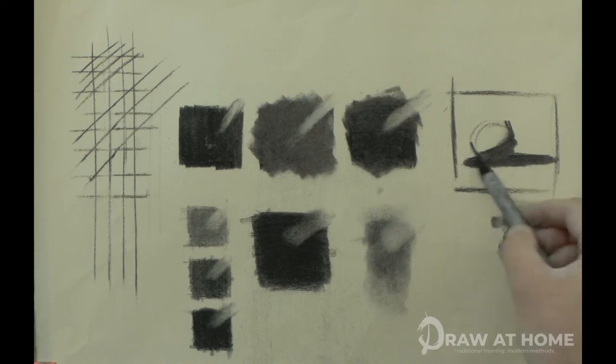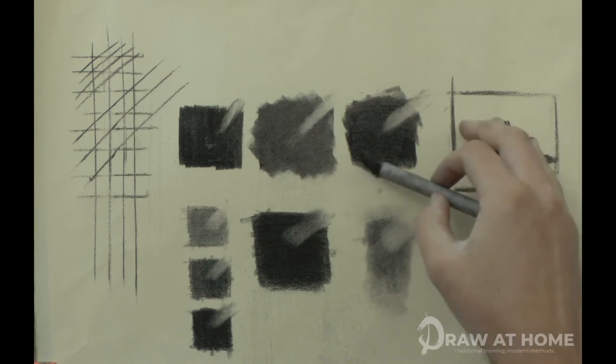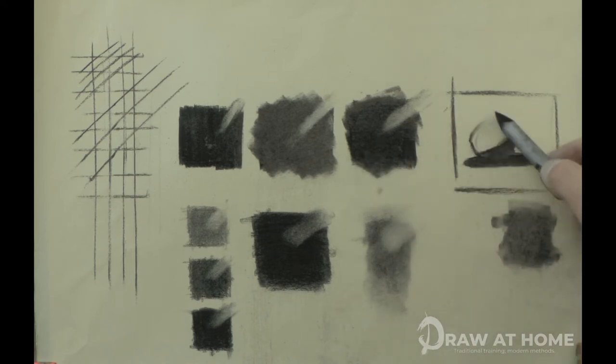Next a value is found around the still life using the stump, not too worried about the particular value, just one that is slightly darker than the paper. This creates our environmental value.